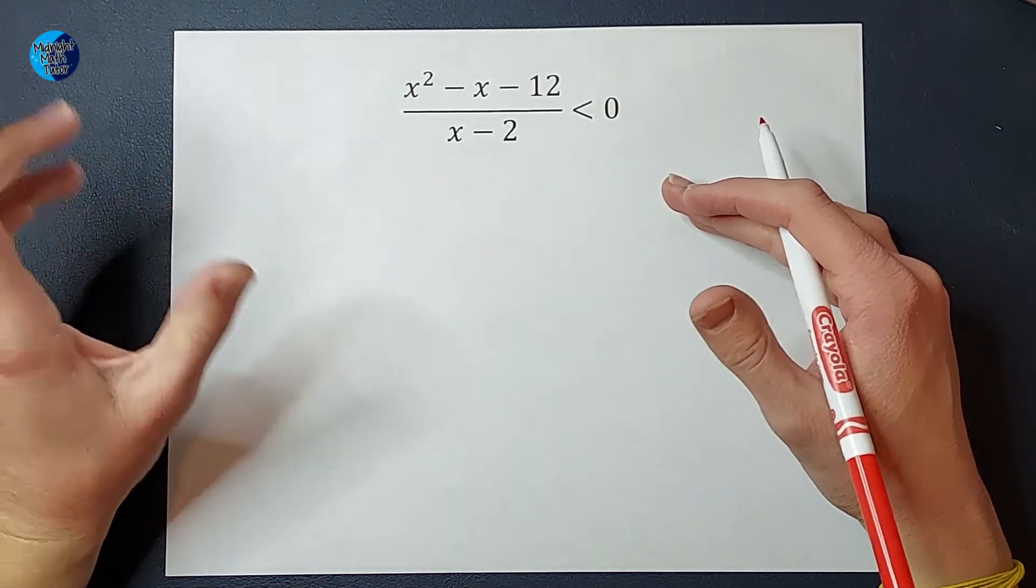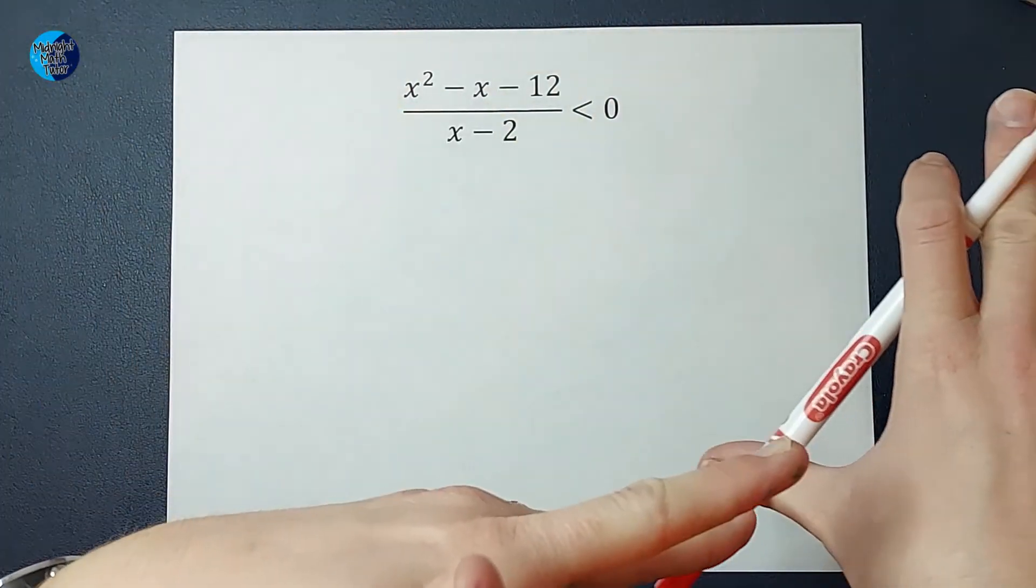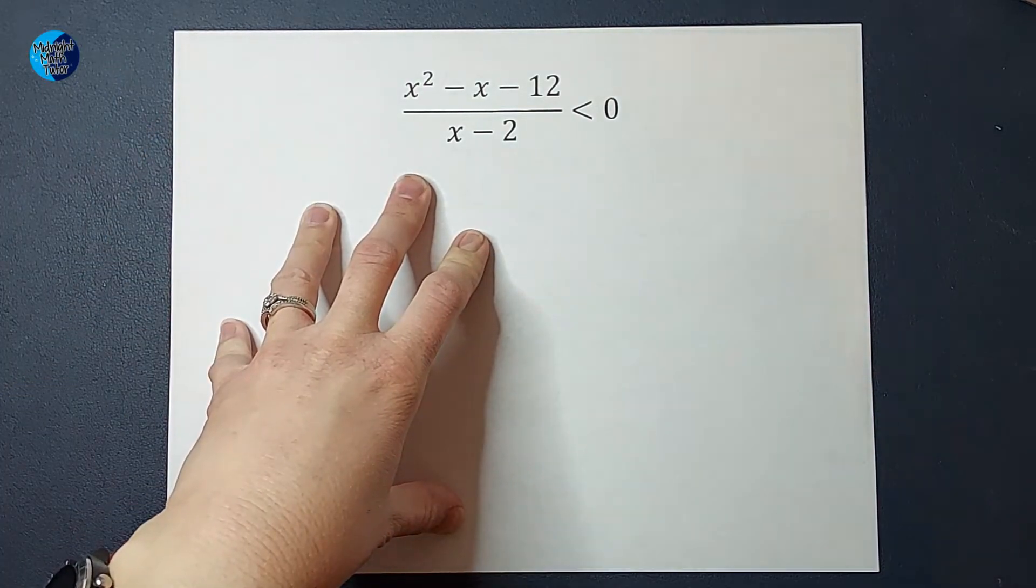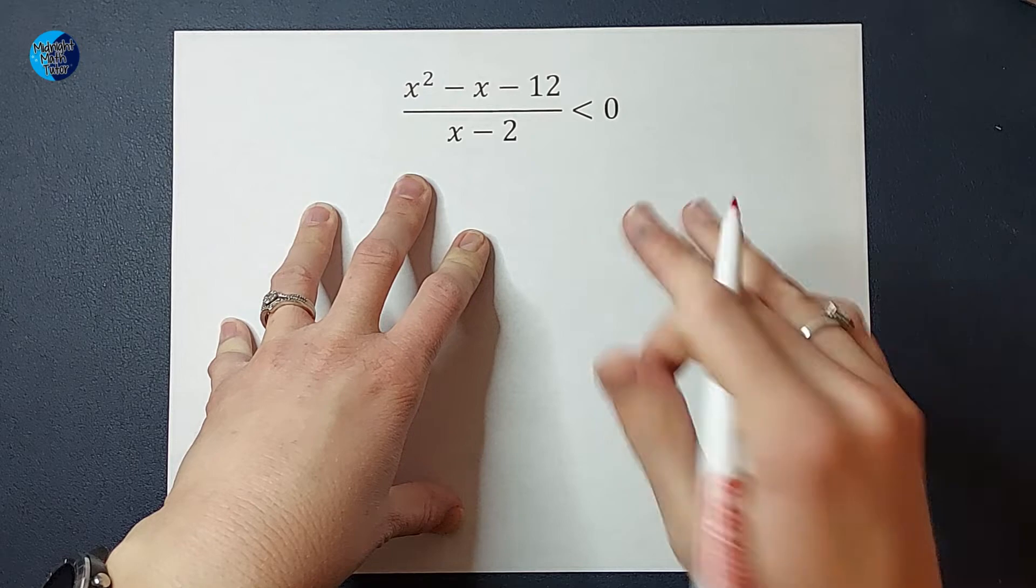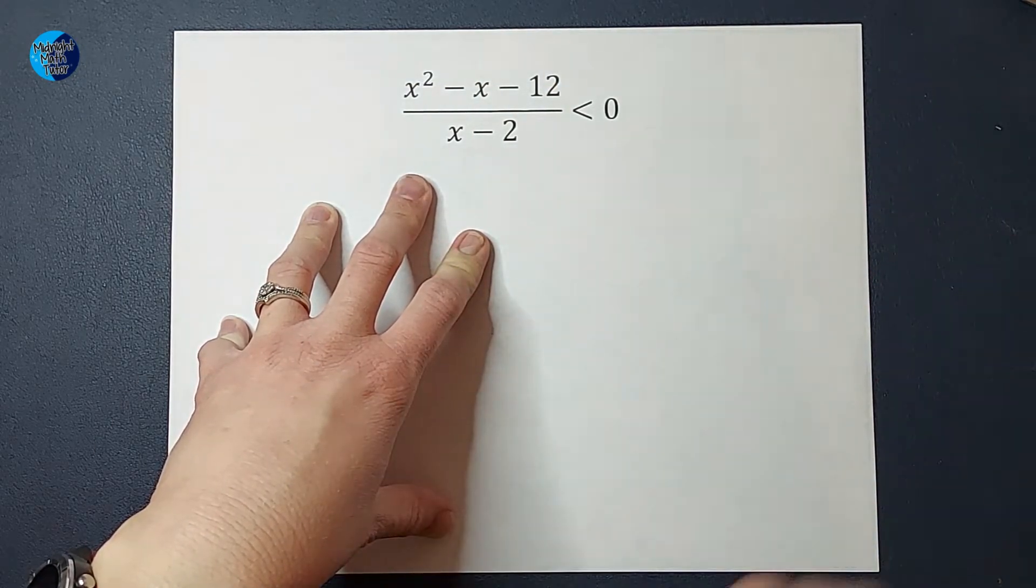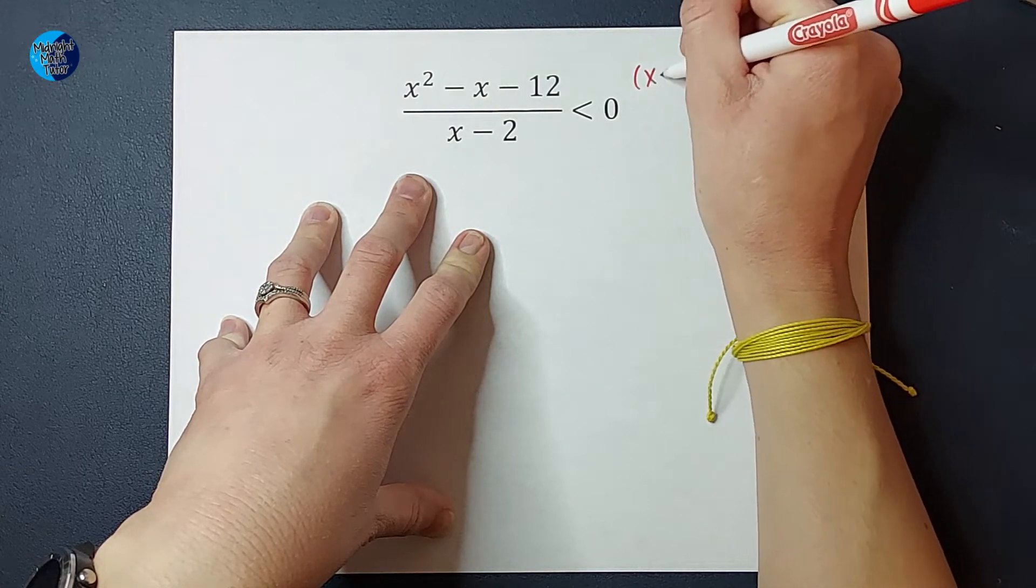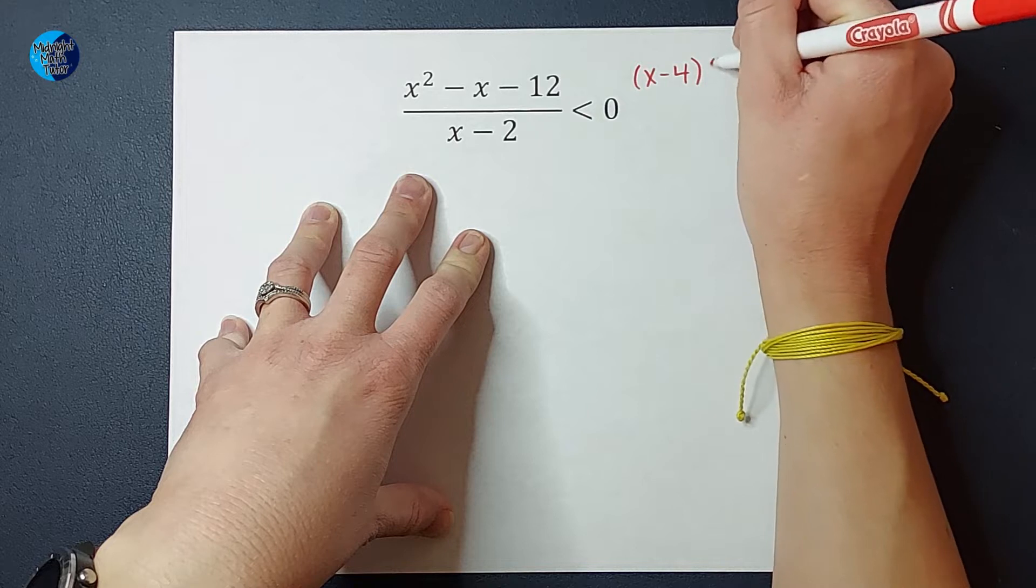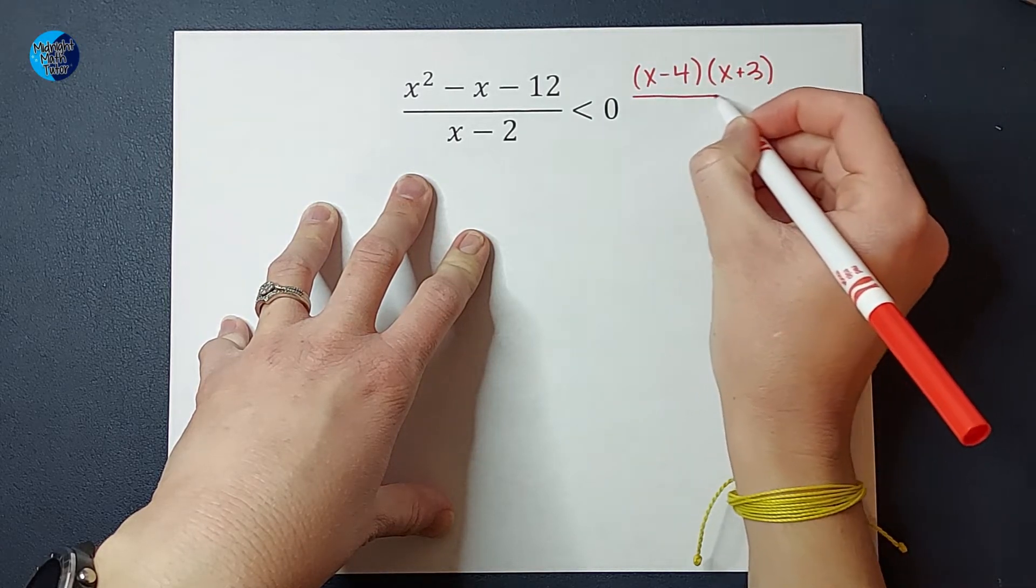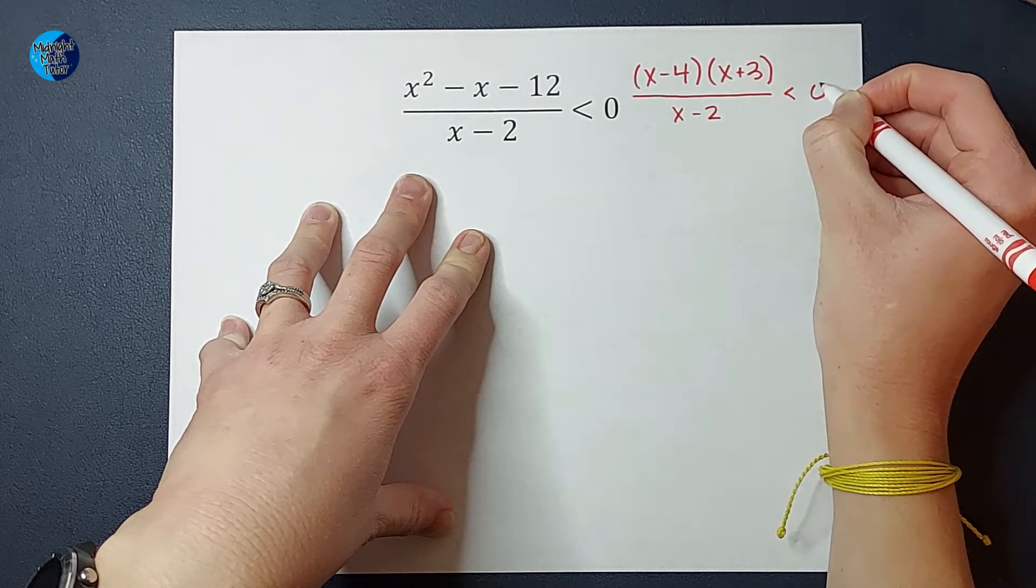The first thing I want is all of my numbers and variables on one side and zero on the other side, so we're good here. The next thing I'm going to do is factor if I need to. My numerator can factor - this factors to (x - 4)(x + 3) on the top, then we're still x - 2 on bottom and we are still less than zero.